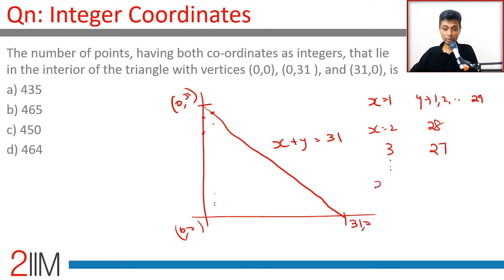We could go all the way till... x equals 30 is not possible. The moment you put x is 30, y will have to be 0, that's not possible. When x is 29, y will have only one possible value.